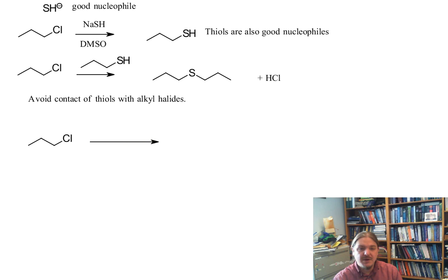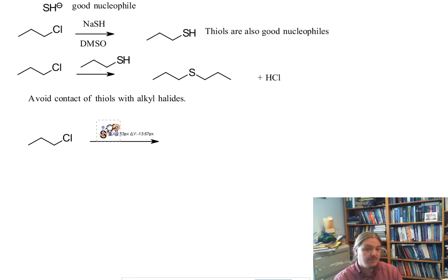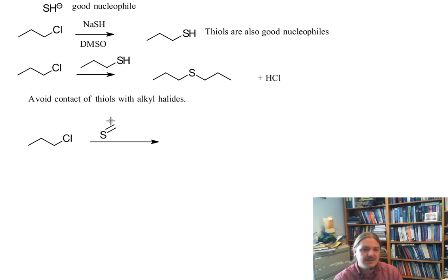The first method involves swapping thiolate for thiourea. And so thiourea is an analog of urea, except the oxygen has been replaced by sulfur. It has this kind of structure.